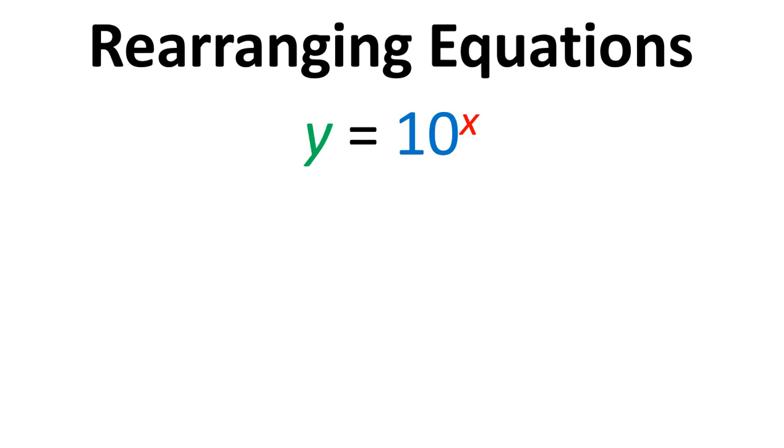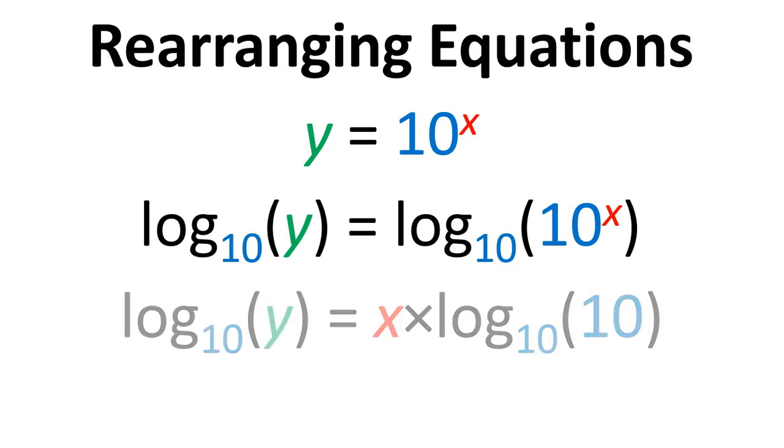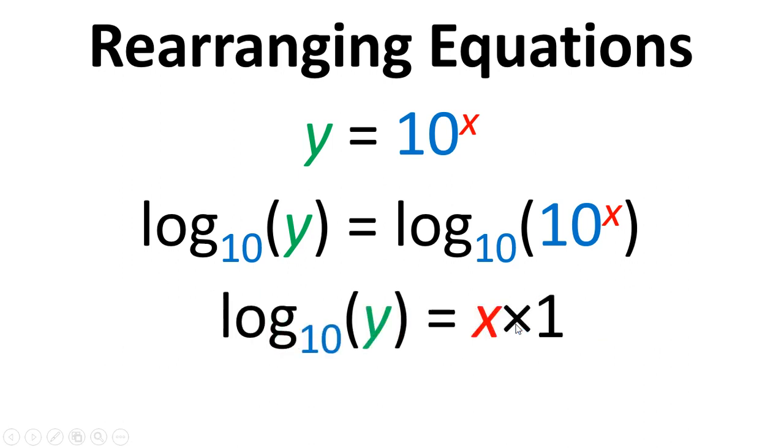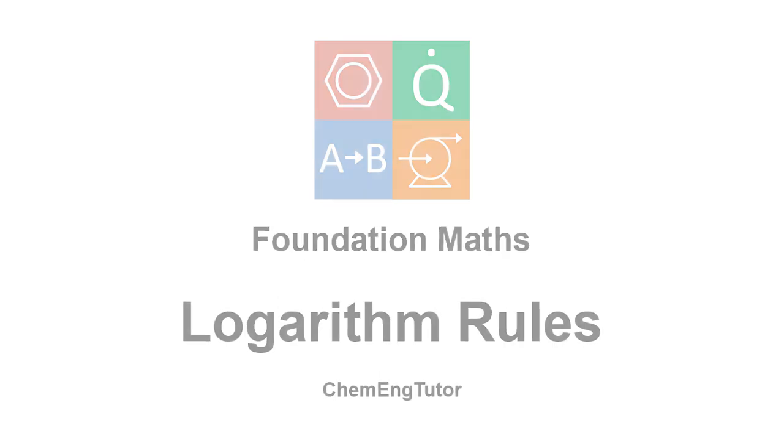In terms of rearranging an equation, we can use these rules, in particular I'm thinking of the third rule. If we take the log of both sides, for this example y equals 10 to the power of x, we can then move the x down. And because the log to the base 10 of 10 is 1, it simply works out that x equals log to the base 10 of y. So we can rearrange the equation in that way. That's been a video about logarithm rules.